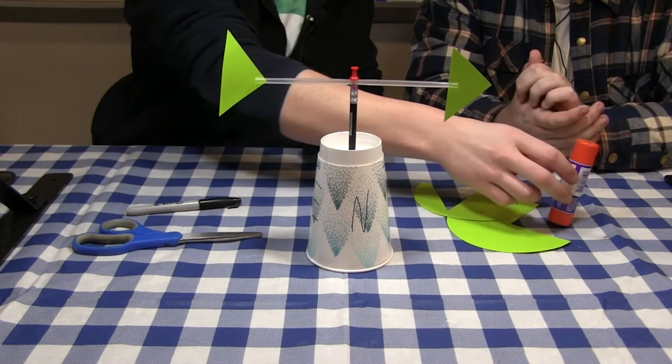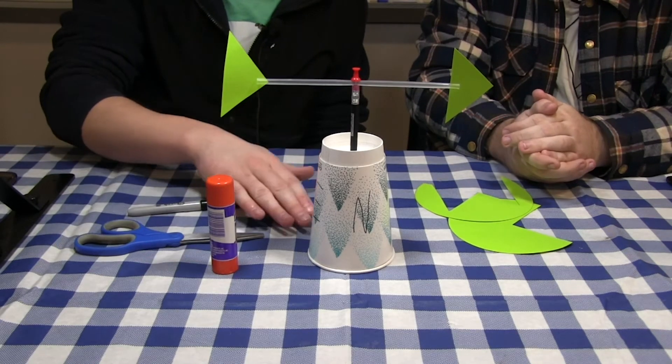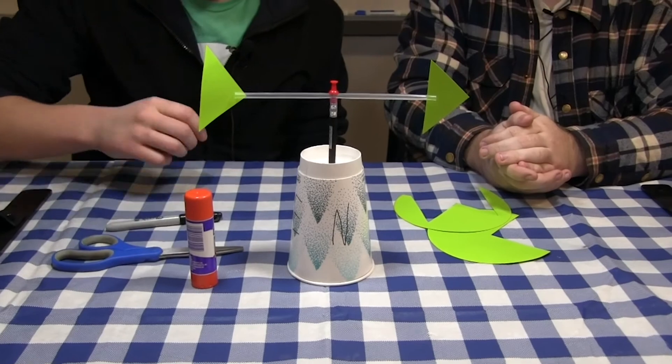The glue stick can be used optionally to attach the cup to a base or to better position the construction paper in the straw.